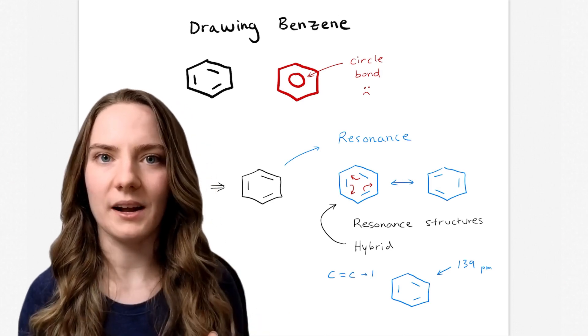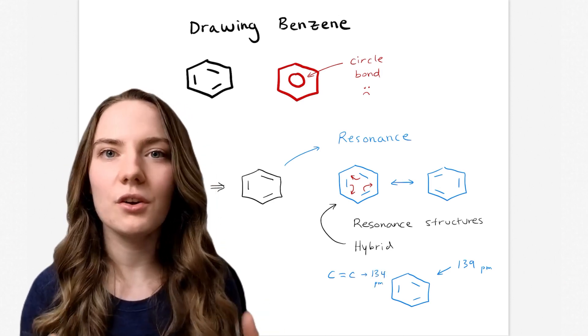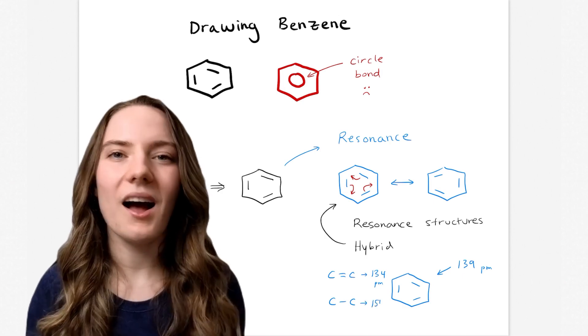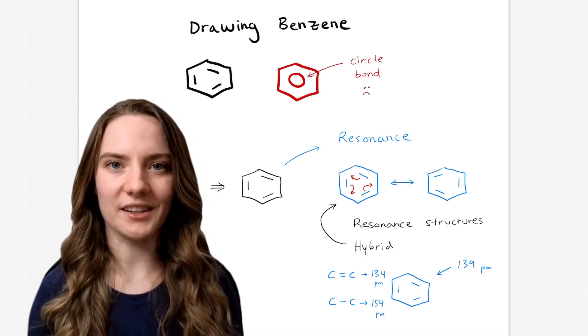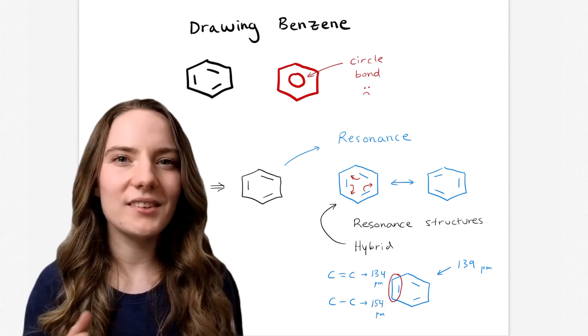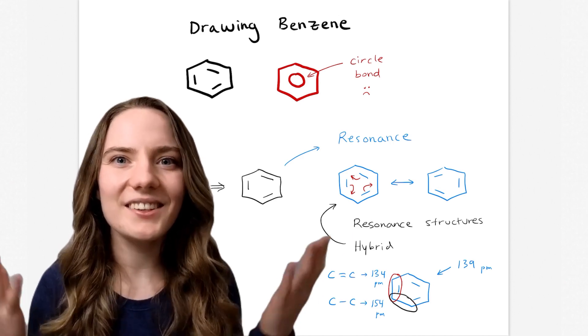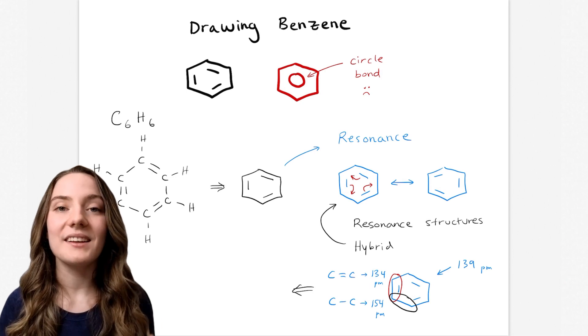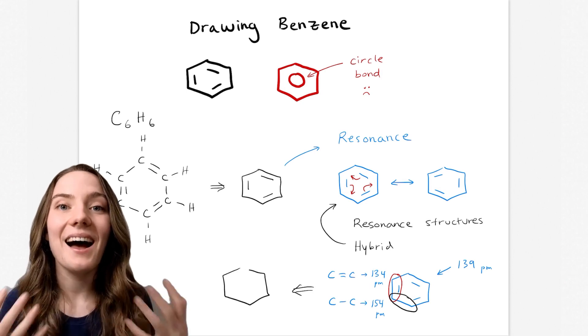Double bonds between carbon atoms are about 134 picometers in length. Whereas single bonds are about 154 picometers in length. So how are the single bonds and double bonds in benzene the same length? The only way this is possible is if the bonds are actually hybrids.